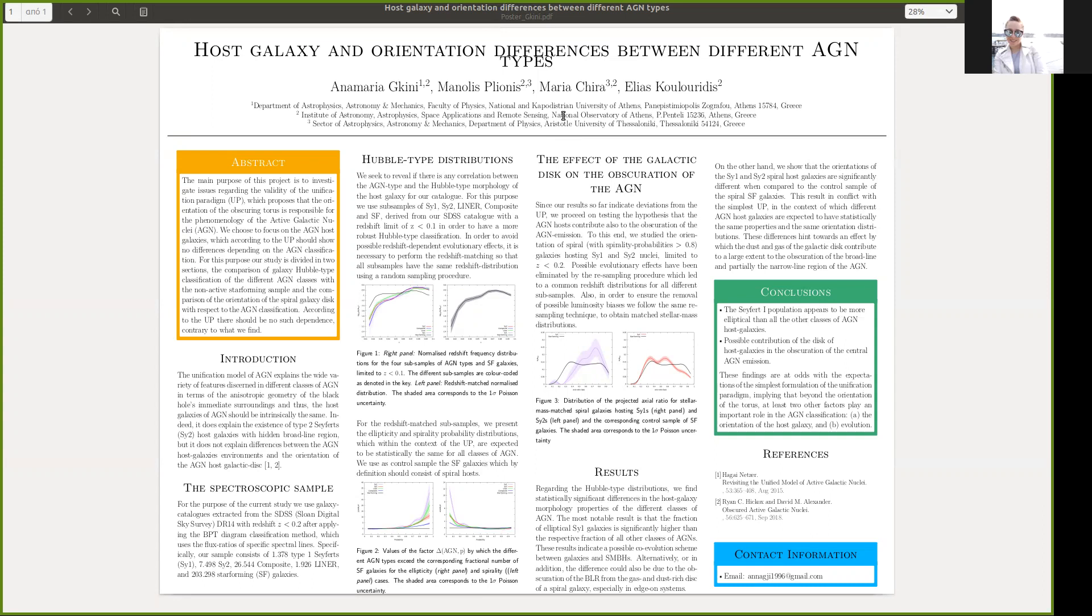In the right plot, the distributions seem similar, but they are still statistically different. The most significant result in this case is that for b over a smaller than 0.2 and higher than 0.8, the fraction of the Seyfert-2 is lower than that of the star-forming.